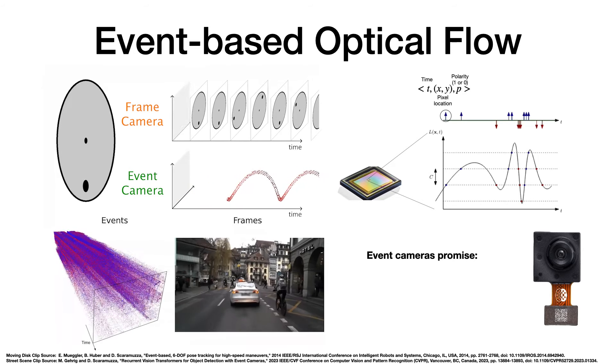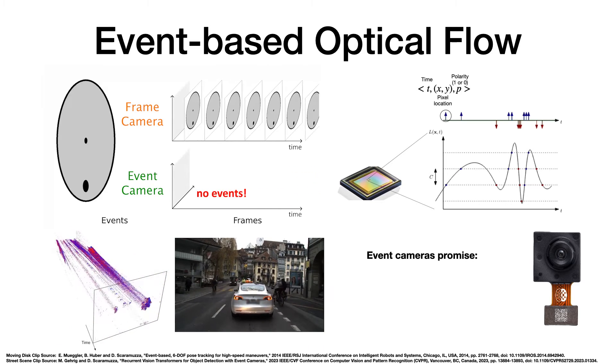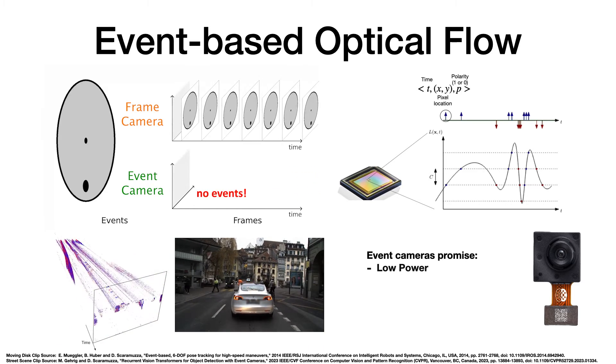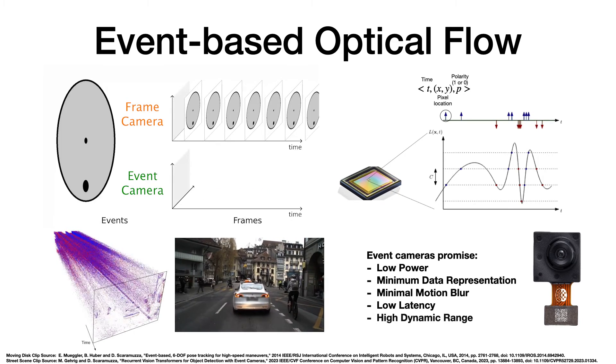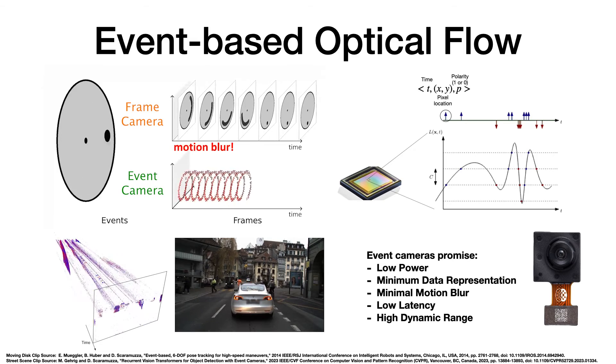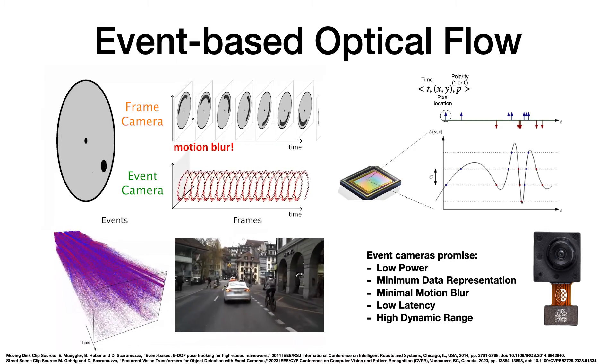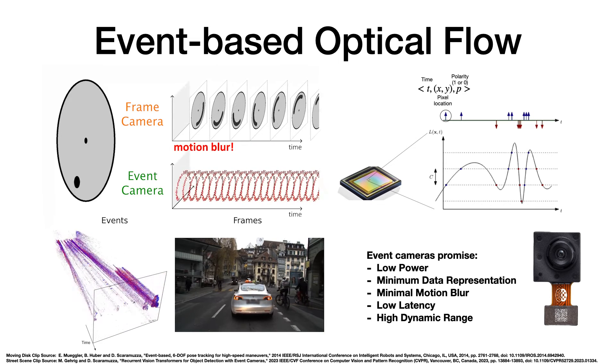Hence, event cameras only detect moving parts of the scene, ignoring static elements. This not only reduces power consumption, but also minimizes data output, enhancing the efficiency of downstream processing. In addition, this capability allows for continuous blur-free motion capture with minimal latency, even in high dynamic range conditions.